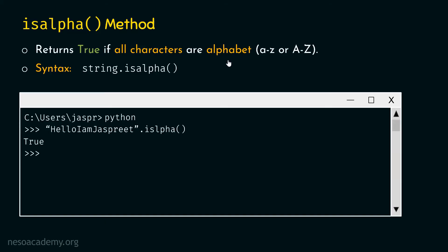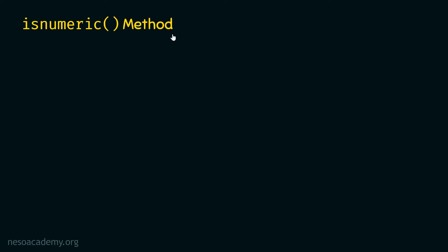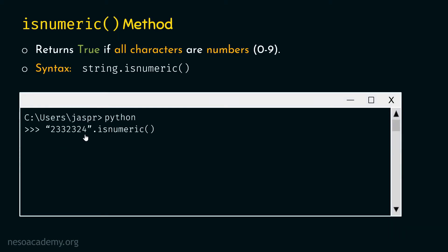Now let's move on to the next topic, which is the isnumeric method. What is the isnumeric method? The isnumeric method returns true if all characters are numbers from zero to nine — so all characters need to be numbers. The syntax is: string dot isnumeric with parentheses, and again within the parentheses we do not pass any arguments. Let's open the command prompt and type '2332324'.isnumeric().